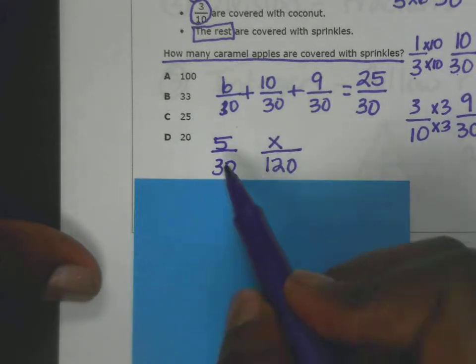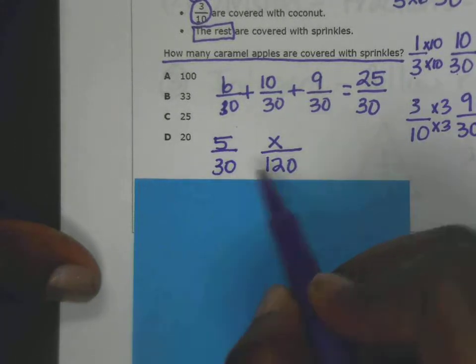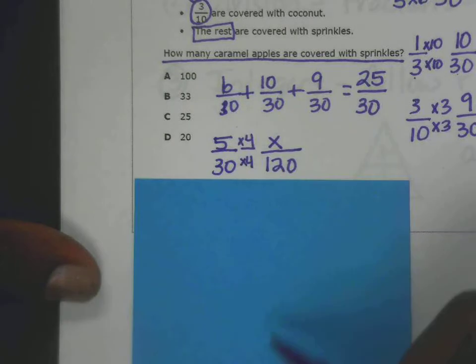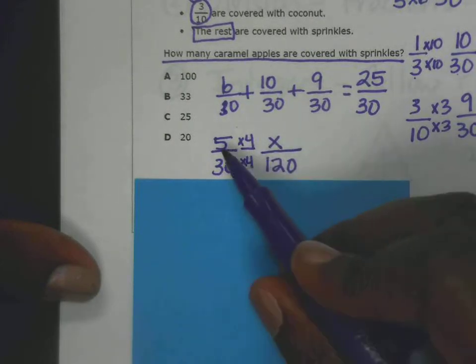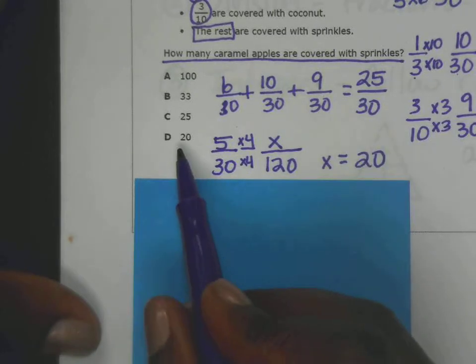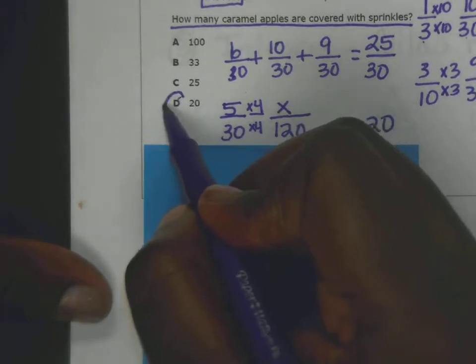I need a proportion. If 5 out of 30 have sprinkles, how many out of 120? You can cross multiply and divide, or you can see that if I multiply 30 by 4, I get 120. So 5 times 4 is 20. That means 20 of the caramel apples are covered with sprinkles. The answer is D.